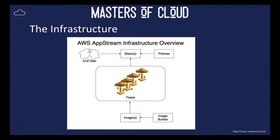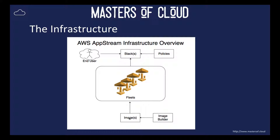Another policy might allow users to connect to Google Drive when they log into the fleet. Then we have fleets with multiple instances — one user connects to the first instance, the second user to the second instance, and the fleet automatically scales and descales depending on how many users are connecting or what scaling policies you provide. The fleets and instances are based on images built using the image builder, where you install your own software and line of business applications, save it to your own private image, and the entire fleet is built on that image.